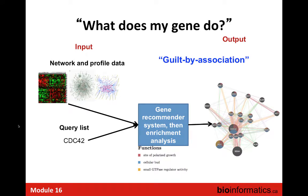To answer the question 'what does my gene do,' we take the input — all the network and profile data we can get — and a query list, which in this case is just a single gene, and we push those through a gene recommender system. A gene recommender system is a system that recommends genes. It's like Amazon: you like this book? You're going to like these books too. If you're interested in this gene, these are the other genes that interact with it — probably the ones you want to look at.